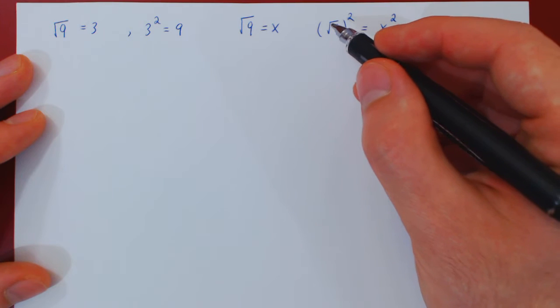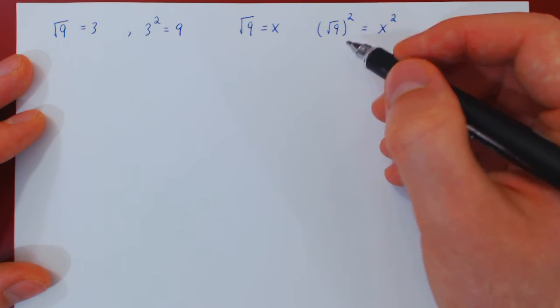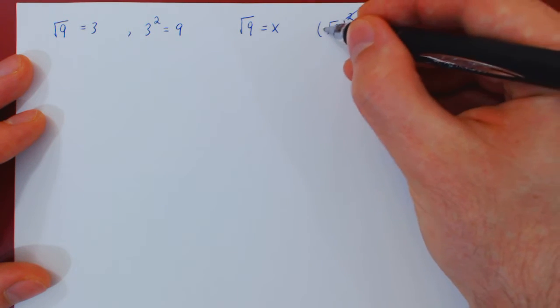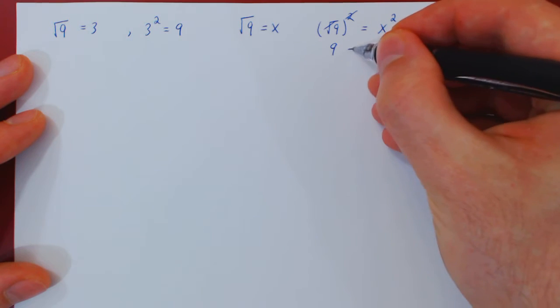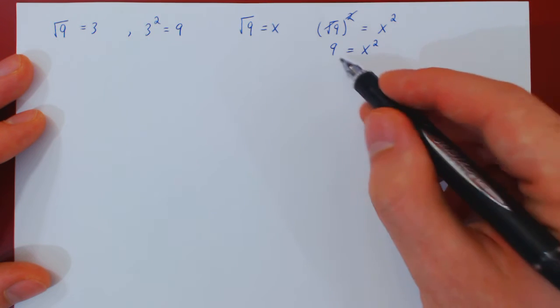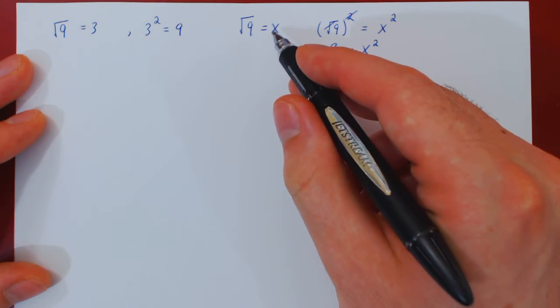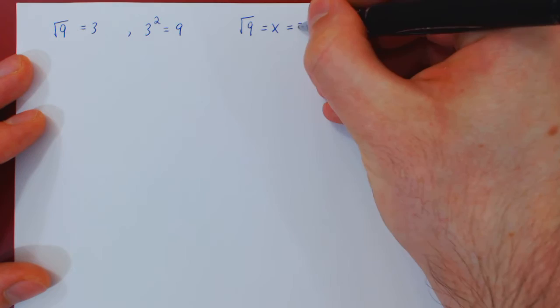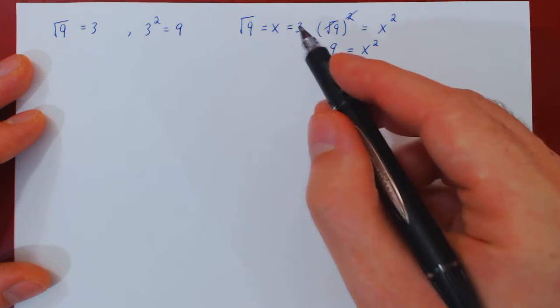But by definition, the square root is the inverse function of the square, so these two will cancel. And you are asking what number x has the property that x squared is 9, and of course the answer is 3, and that's why the root of 9 is 3.